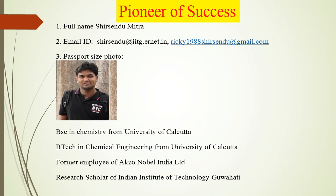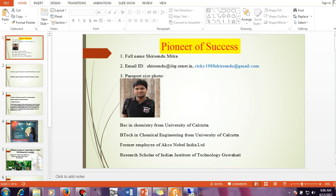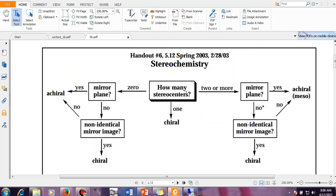Kindly subscribe to our channel to get updates whenever we upload more chemistry videos. About myself — I'm Shishan Umito, a research scholar at the Indian Institute of Technology Guwahati. I completed my BSc from the University of Calcutta and BTech in Chemical Engineering from the same university. Now in this video, we will be talking about RS nomenclature.